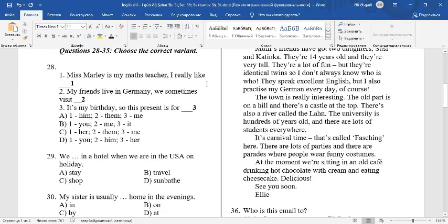28. Here, we complete the sentences with the correct object pronouns. 1. Miss Marley is my math teacher. I really like Miss Marley, she. The object pronoun is her. I really like her. 2. My friends live in Germany. We sometimes visit my friends. They. The object pronoun is them. We sometimes visit them.